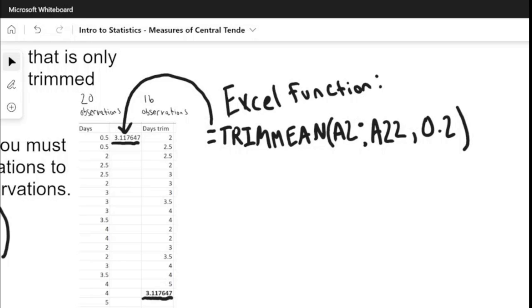So essentially, you would take two observations off each end of the data set. You can copy that over with just the 16 observations and then calculate the mean for that, and that will give you the same answer as the trimmed mean on the original data set.